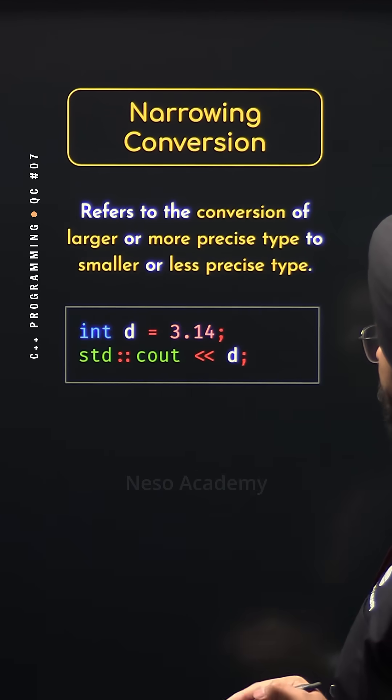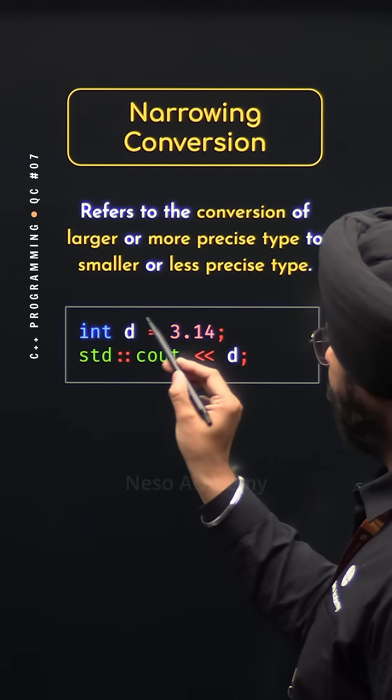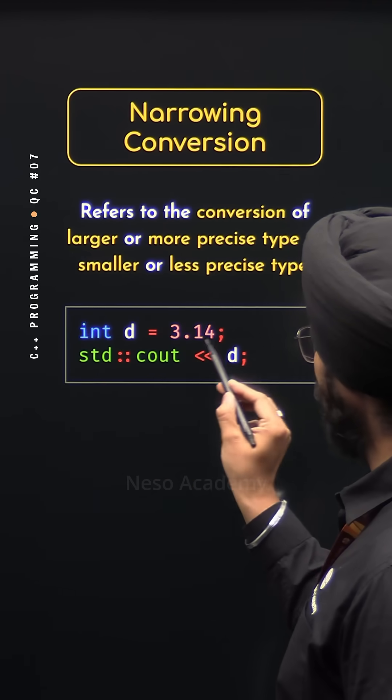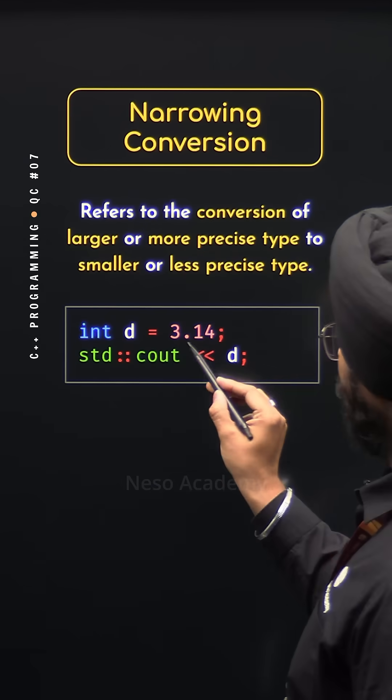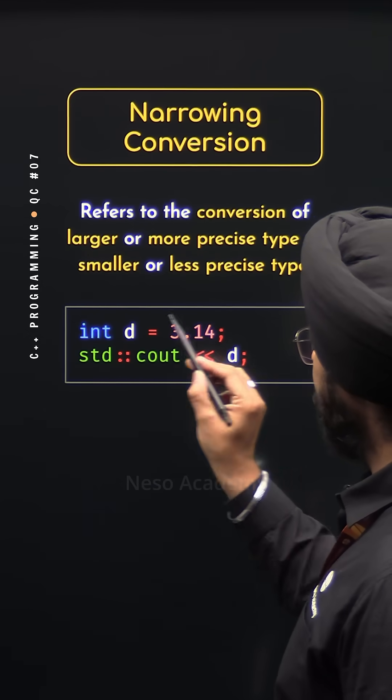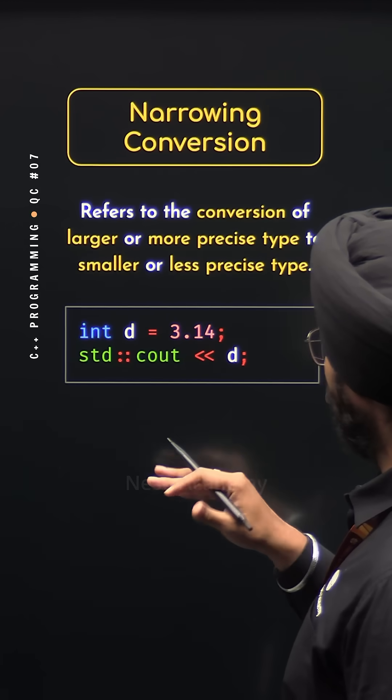Now let's take a simple example. Here I've defined this variable d of type integer and I'm trying to initialize this variable with the floating point value 3.14. We know floating point value is larger or more precise compared to integer value which is smaller or less precise.